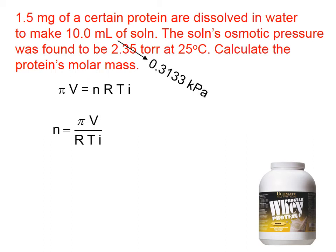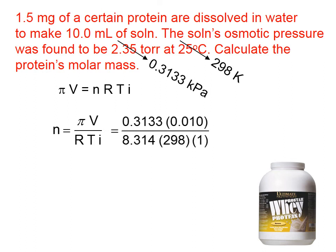I'm going to convert torr into kilopascals so that I can use the 8.314 value for R. The temperature we need to have in Kelvins, Celsius plus 273 gives you the Kelvin temperature. That is now in the proper unit. Mentally, we're going to just go ahead and change milliliters into liters. We can certainly do that, and then we talked about how the van't Hoff factor is going to equal one.